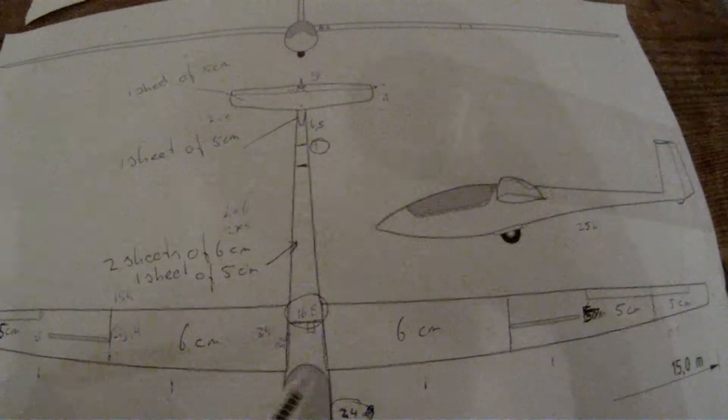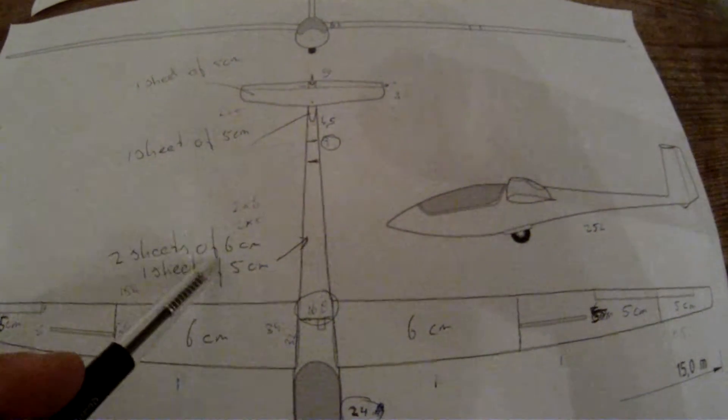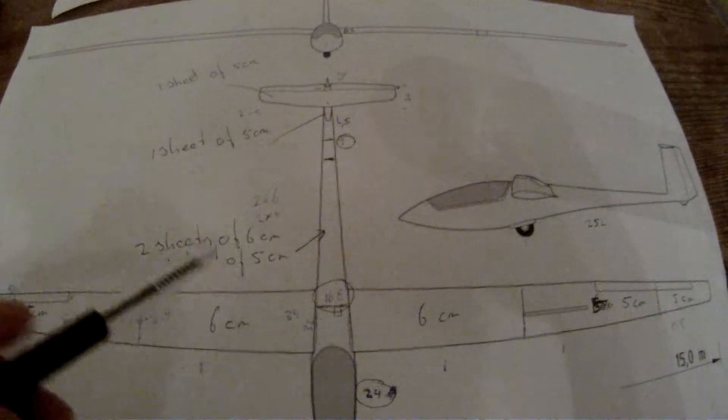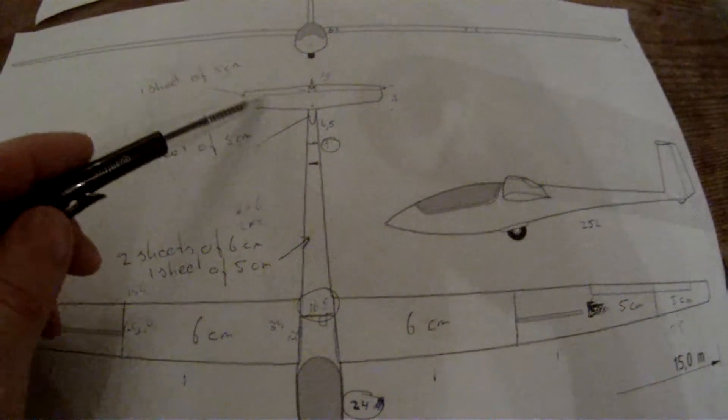So we need two sheets of six centimeters and one sheet of five centimeters. And for the stabilizer we just need one sheet of five centimeters.